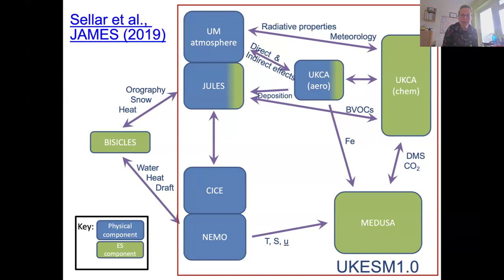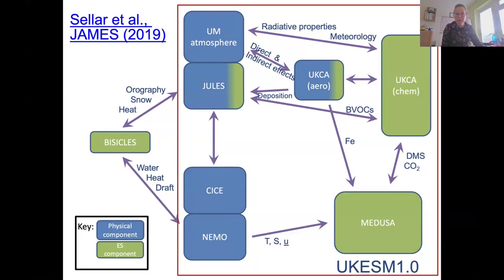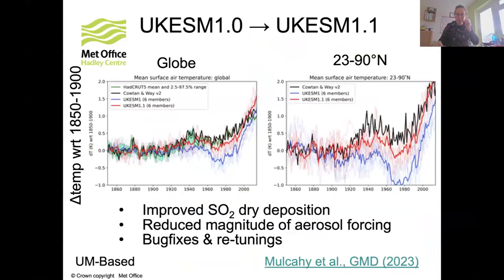The Earth system model encompasses all those components, described in a paper by Alistair Sellar published in JAMES in 2019. BISICLES, an ice sheet model, was not included in UKESM1.0, but coupling of BISICLES with the rest of the Earth system model is ongoing and will be included in future releases.